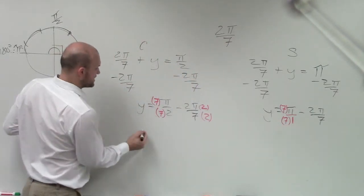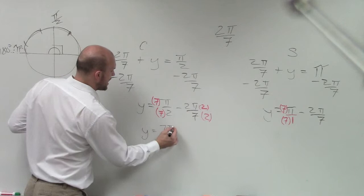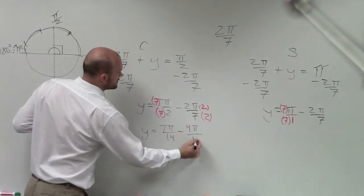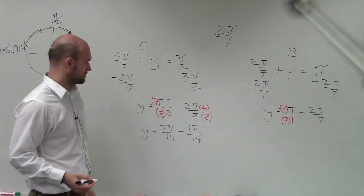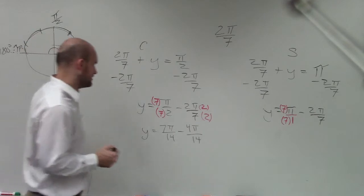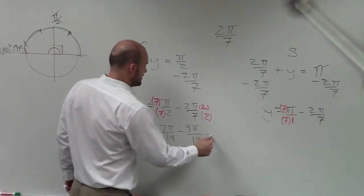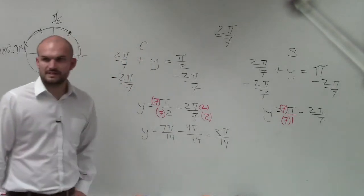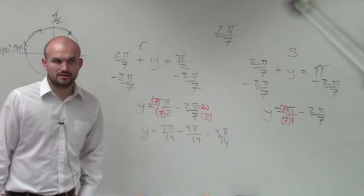So therefore, in this case, I have y equals 7 pi over 14 minus 4 pi over 14. That isn't the answer I have. Yeah, it is. Yeah, that's right. And that equals 3 pi over 14. Did I say I got that answer? Complement? No? Or did I lose you?